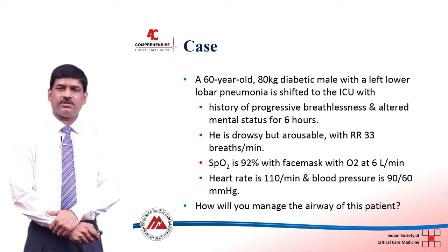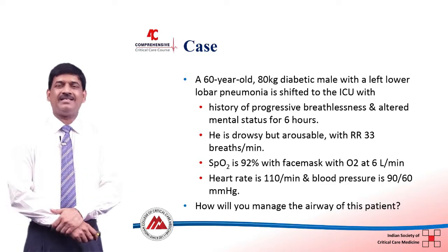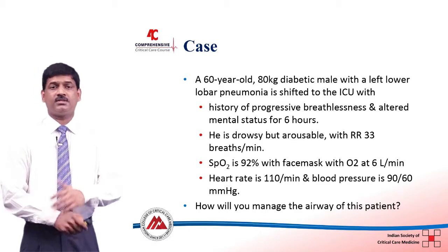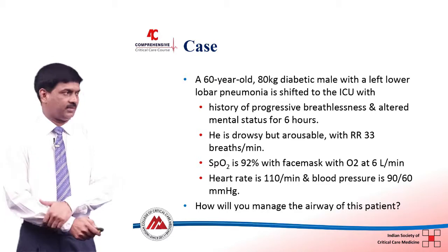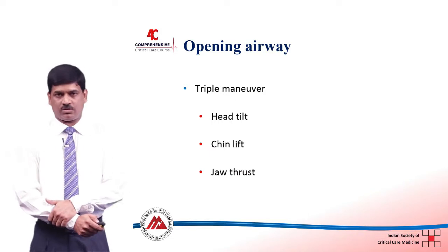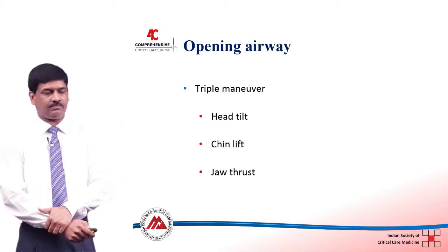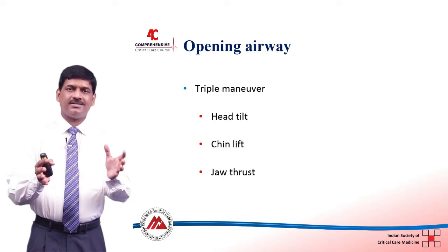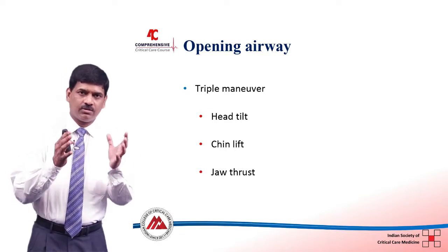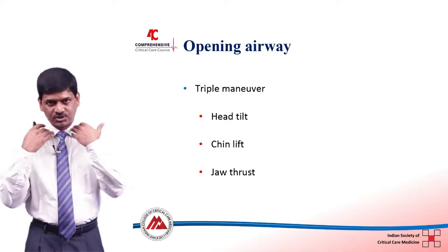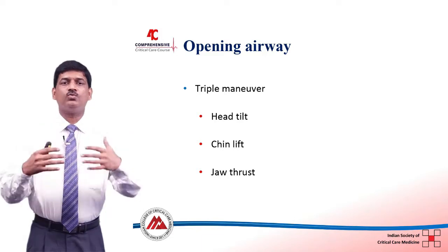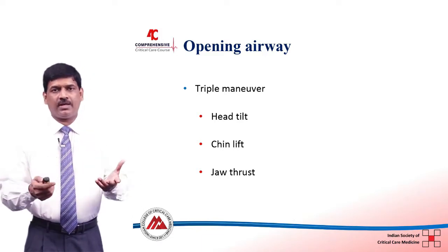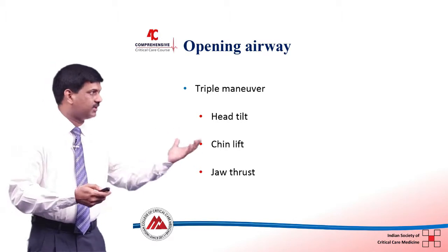This patient is drowsy and he is slightly obstructing his upper airway. He is hypoxic and hypotensive as well. So how to start with opening the airway? As I told you earlier, whenever a patient is having low GCS with an obstructed airway, we need to open up the airway first. How to open up the airway is by doing a triple maneuver.